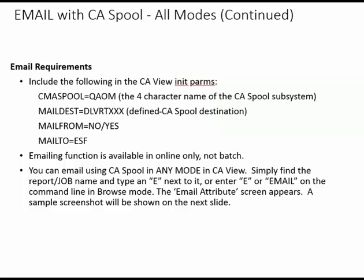Simply find the report or job name and type any next to it, or enter E or email on the command line within browse mode. The email attribute screen will appear. A sample screenshot will be shown on the next slide.